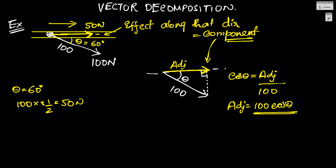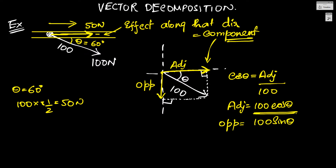So we can ask ourselves: where did the rest of the force go? Well, this vector can have another component — a perpendicular component. We draw another component along the perpendicular axis using the same principle: drop a perpendicular and join the line. This becomes the opposite side, so using trigonometry the perpendicular component is 100 sin theta. In our example, this component is 100 sin 60 = 100 × (√3/2) = 50√3 newtons.